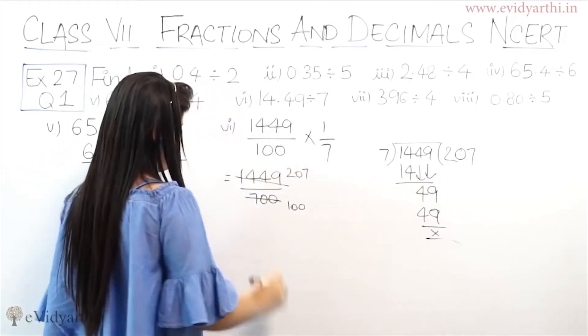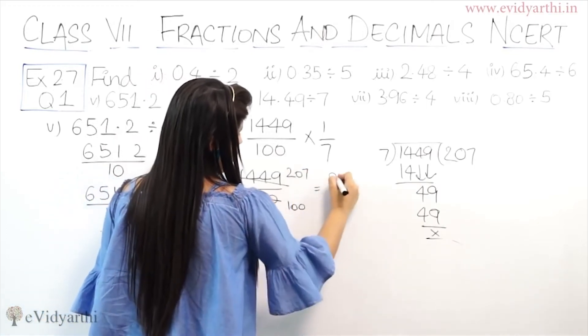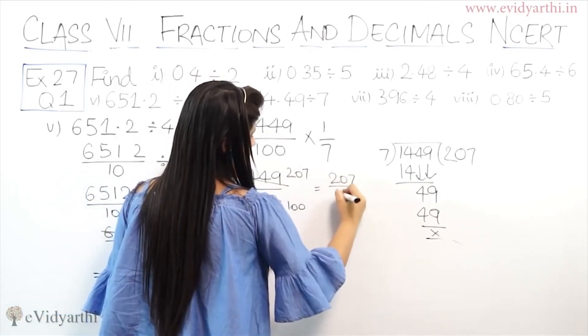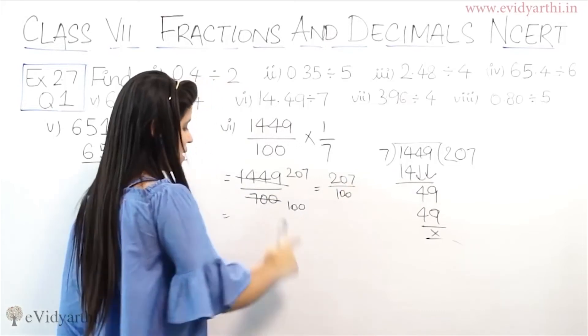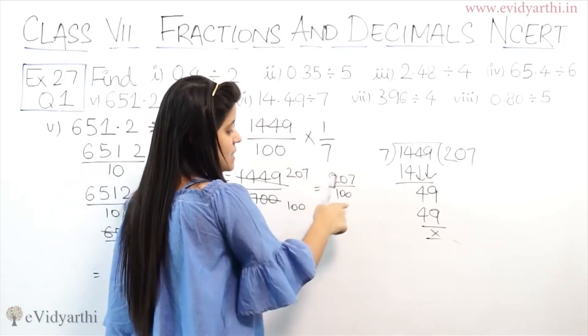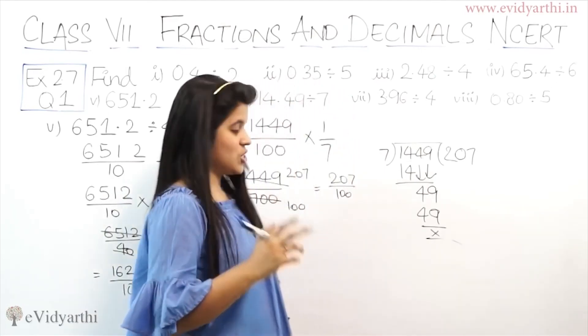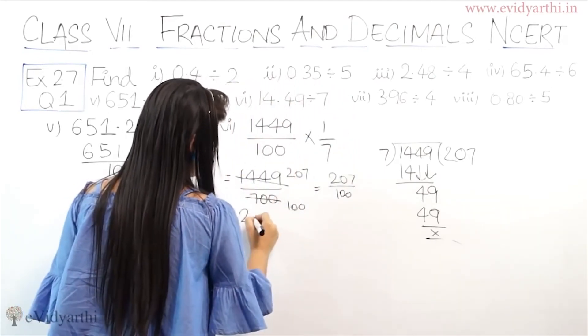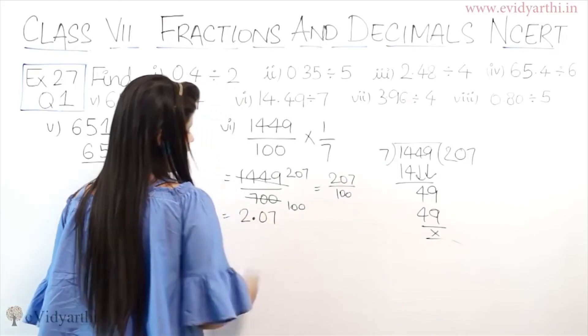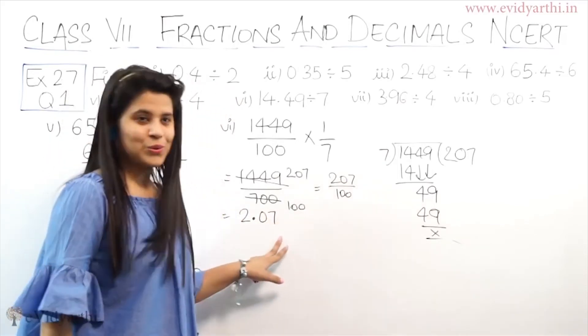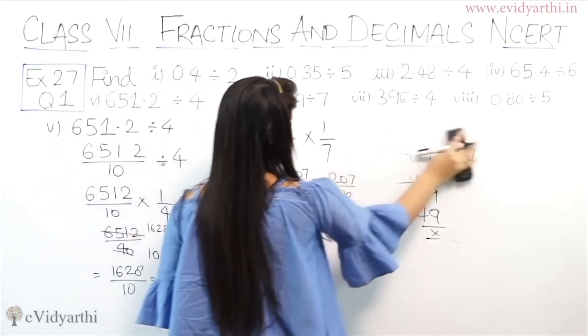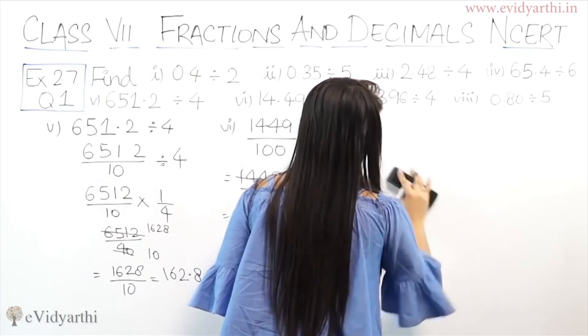So this will be 207. So 207 upon 100. 207 upon 100. 100 means 2 zeros, meaning decimal after 2 digits. So this will be 2.07. Decimal after 2 digits. Now let's come to the 7th part.